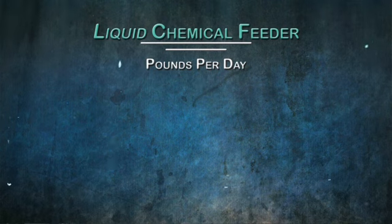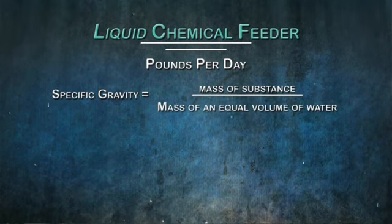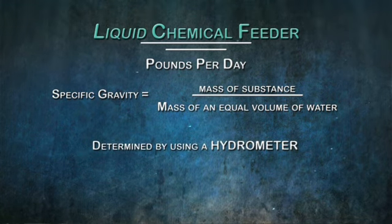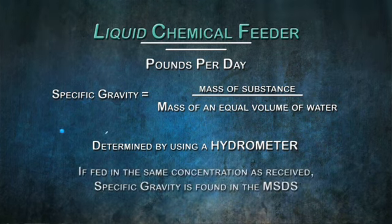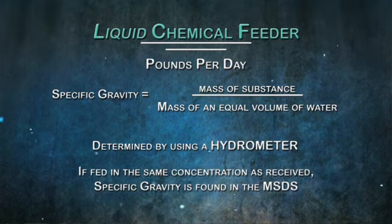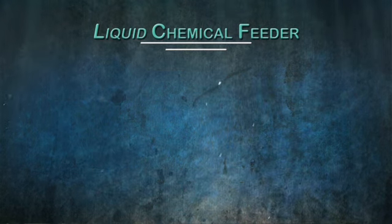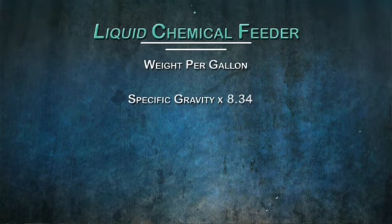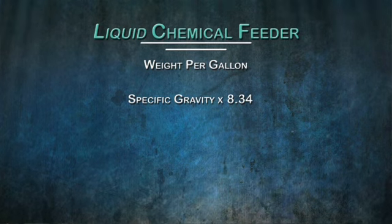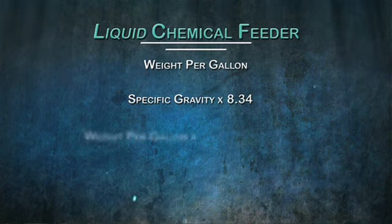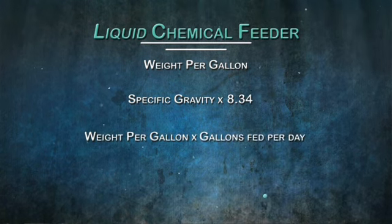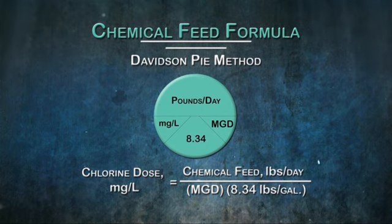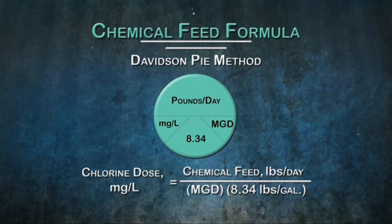Pounds per day is determined first by knowing the specific gravity of the chemical solution. Specific gravity can be determined by using a hydrometer. Or if the chemical is fed in the same concentration as received from the supplier, the specific gravity can be found in the material safety data sheet. The weight per gallon of chemical is determined by multiplying the specific gravity by 8.34. Finally, to determine the quantity of chemical solution being fed, you would multiply the weight per gallon by the gallons fed per day. Once you know the pounds per day feed rate, you can determine the dose concentration in milligrams per liter by using the Davidson pie chart.